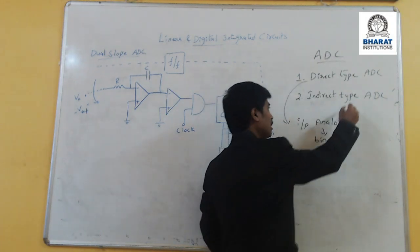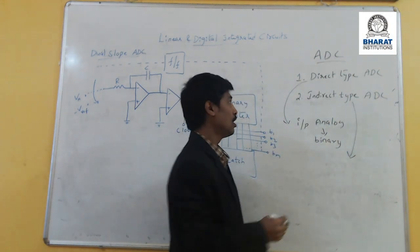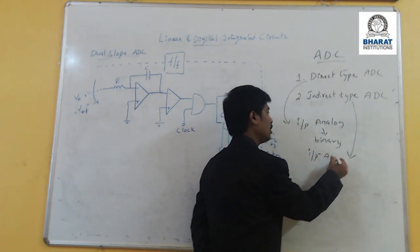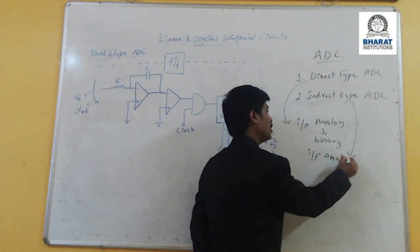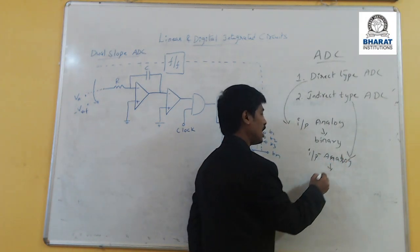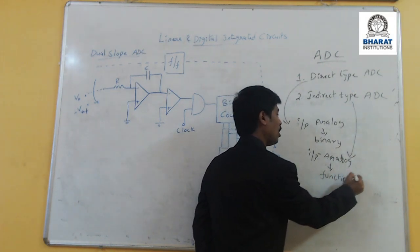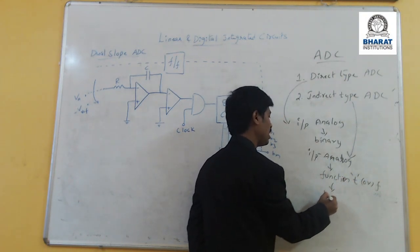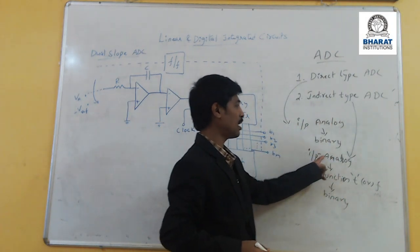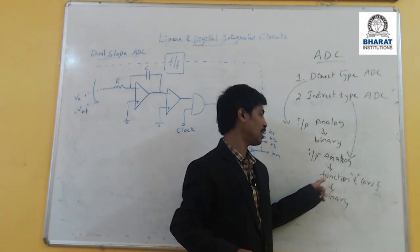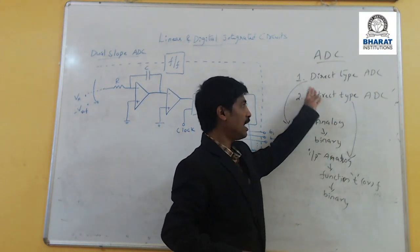The second method is indirect type ADC. In indirect type ADC, first the input is analog in nature and it is converted into a function of time or frequency. With the help of this function, it is again converted into binary — that is the reason we call it indirect type. The analog signal is converted into some other function, and this function is used for converting into binary.